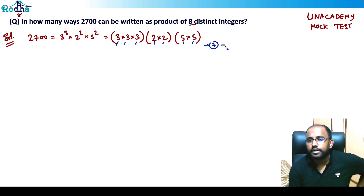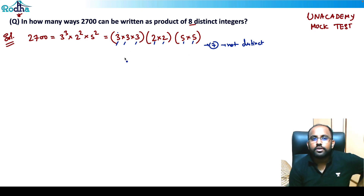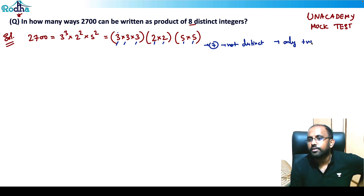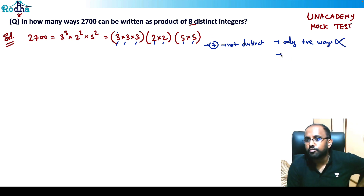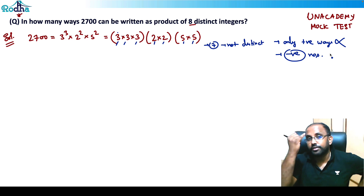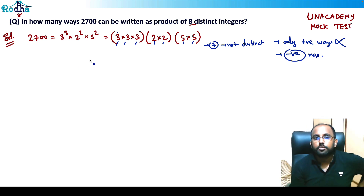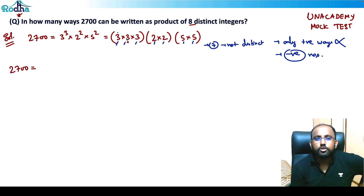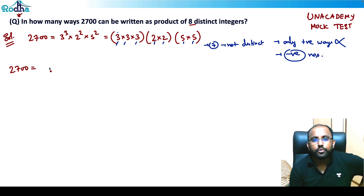Also, these factors are not distinct — three appears three times, two appears twice. So there's no way to write 2700 as a product of eight distinct positive integers only. That means I need to take the help of negative numbers as well.